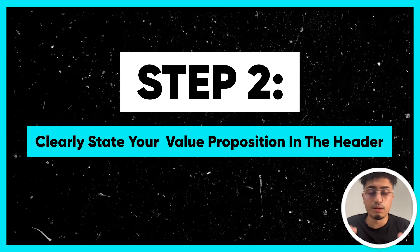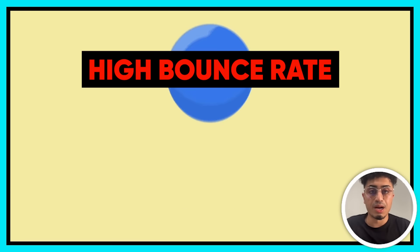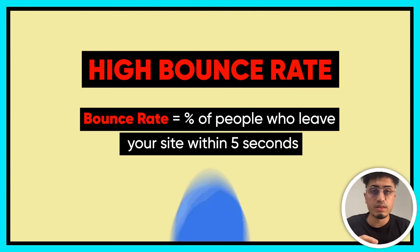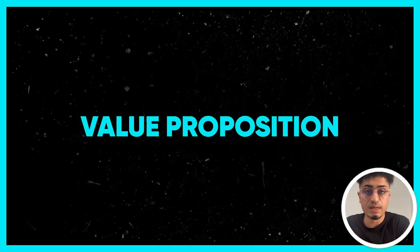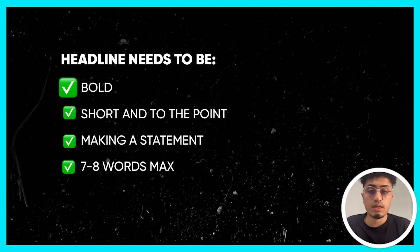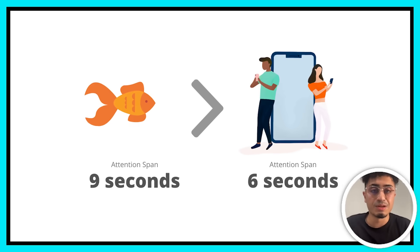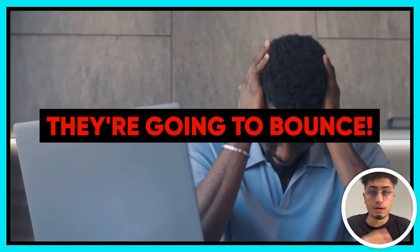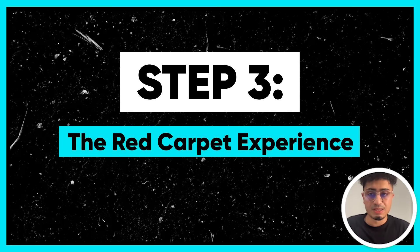Step two: clearly state your value proposition in the header. Eight out of ten people read your headline; only two out of ten read the rest of your body copy. The reason bounce rates are so high today is that the headline doesn't resonate with the end user. To fix this, your value proposition needs to be completely different from what everyone else is saying and specific to that end user. Your headline needs to be bold, short, and to the point — we recommend seven to eight words max. On average, sites today have a bounce rate of 80 to 90%.